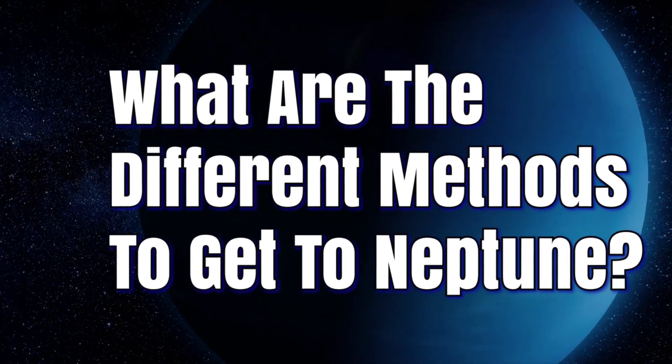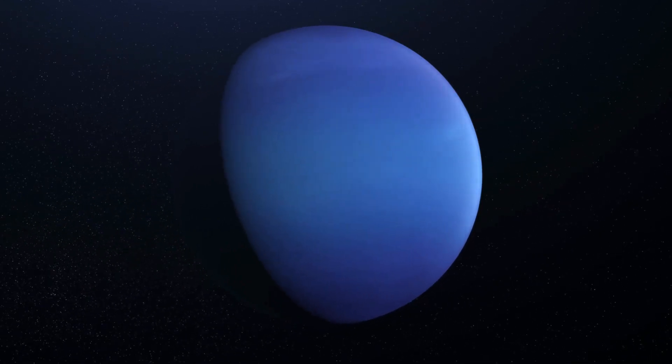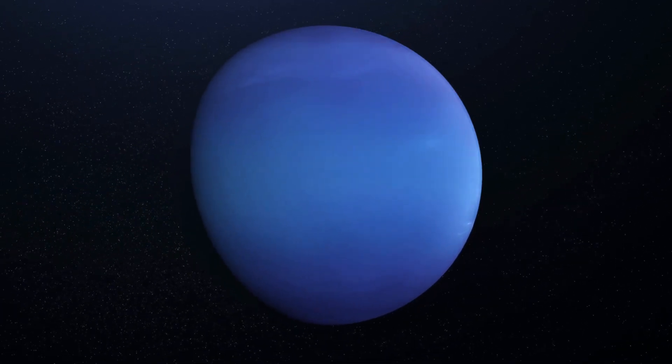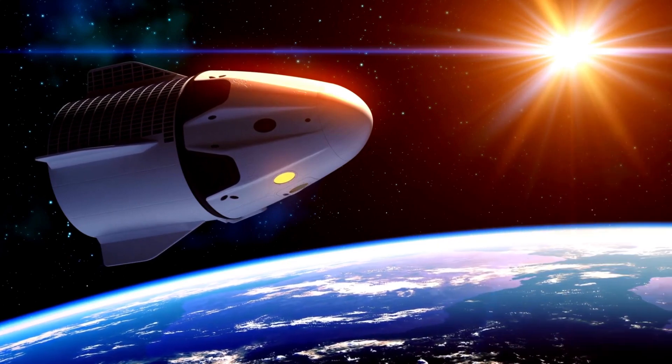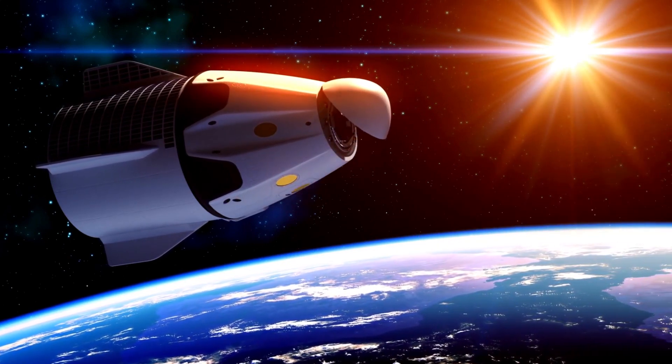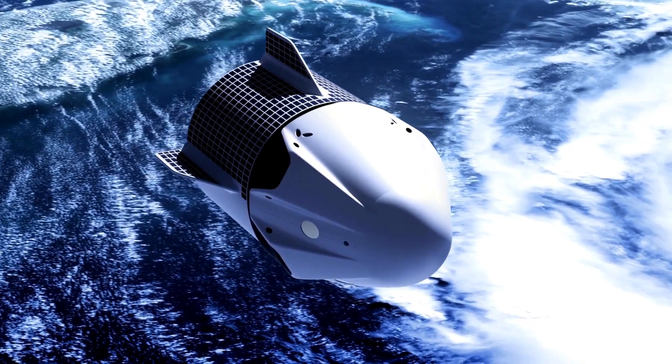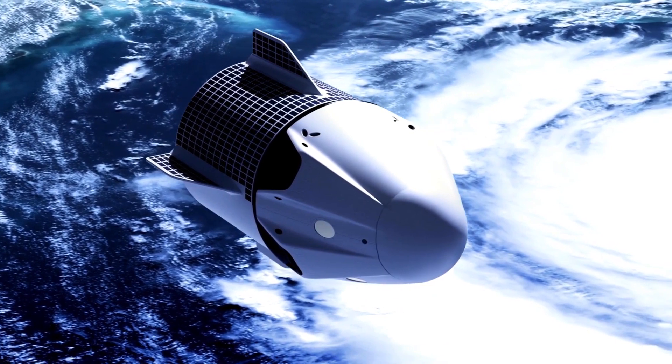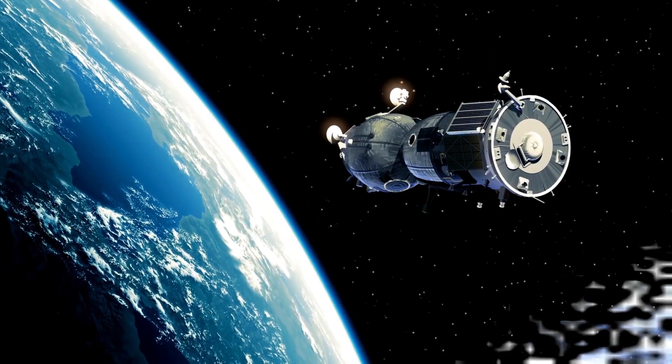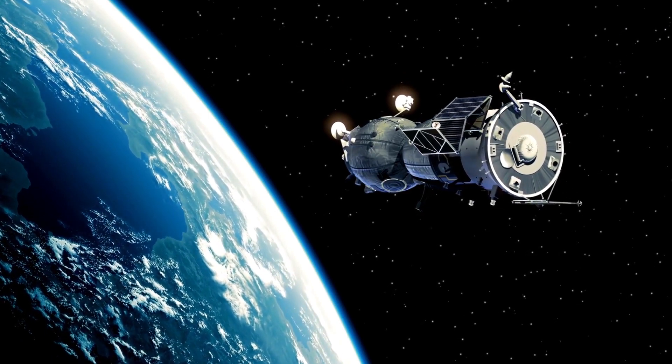What are the different methods to get to Neptune? There are not one, but two thrilling ways to reach the majestic planet Neptune. The first method is called direct insertion, where you rocket straight from Earth to Neptune using either chemical or nuclear propulsion. It's a speedy journey of 12 to 16 years, the quickest of the two methods. However, it requires substantial fuel, making it impractical for most expeditions.